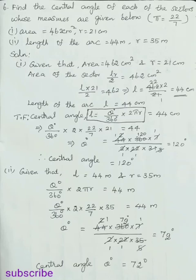We are going to discuss exercise 2.1, sixth problem: find the central angle of each of these sectors whose measures are given below. First: area equal to 462 square centimeters, radius equal to 21 centimeters. Second: length of the arc equal to 44 meters, radius equal to 35 meters. We are going to use pi equal to 22/7.